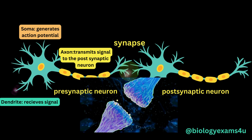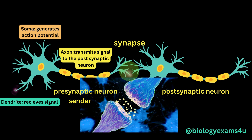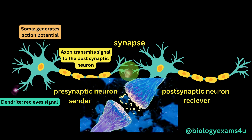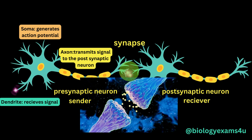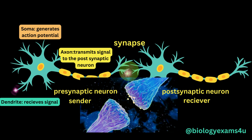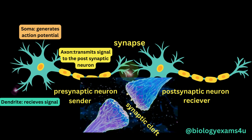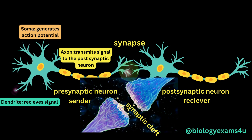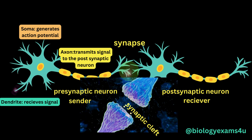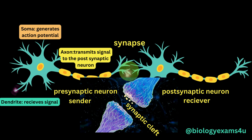Presynaptic neurons are the senders and postsynaptic neurons are the receivers. The communication junction between neurons is called a synapse. Neurons do not physically touch at the synapse, but rather are separated by a small gap called the synaptic cleft, where neurotransmitters are released, induced by the action potential.